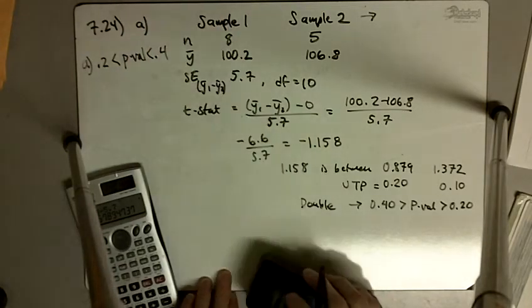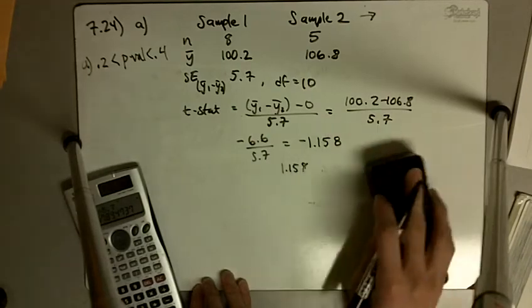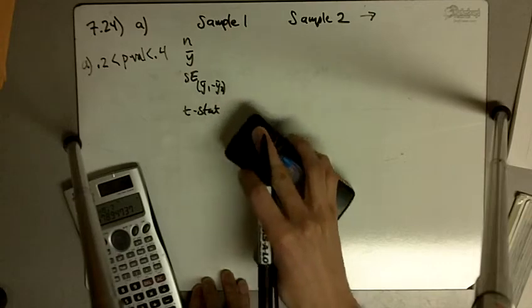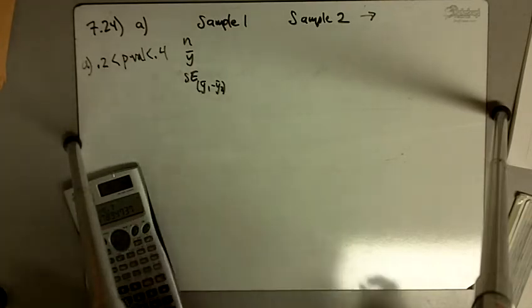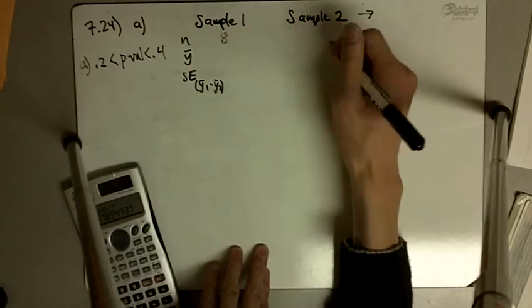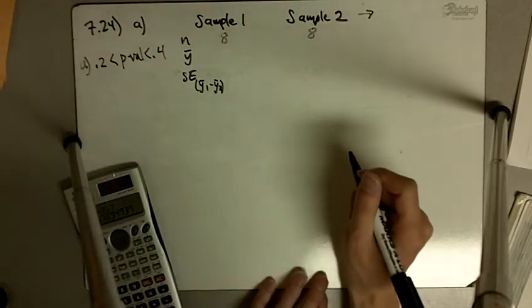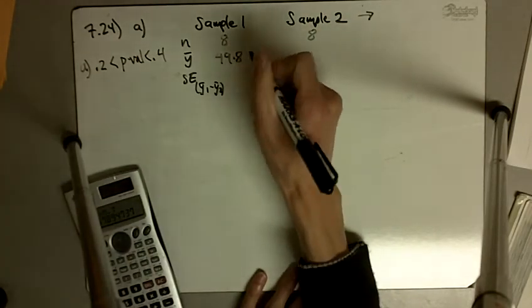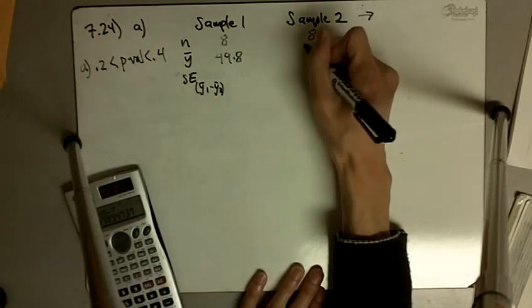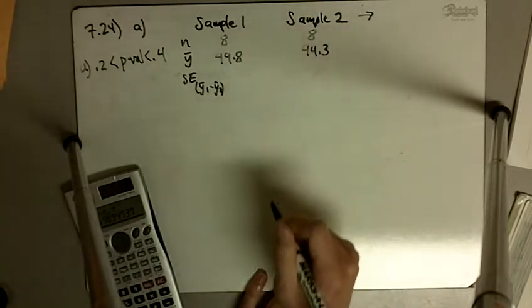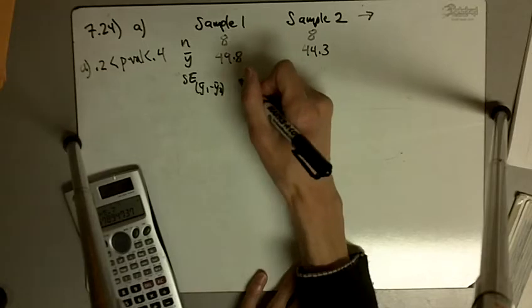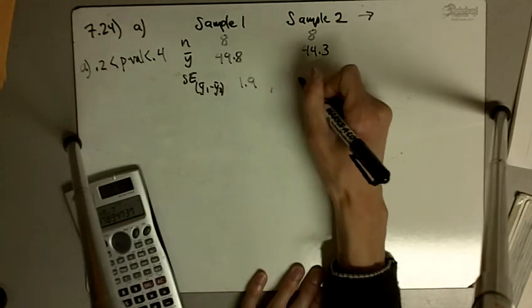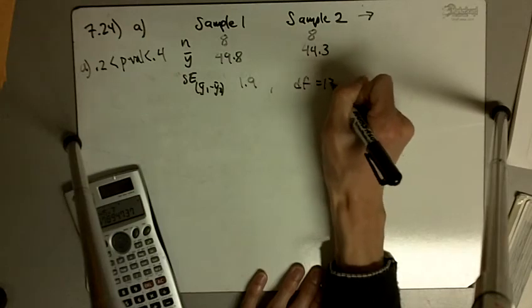Let's do the same for part B. Now our numbers: we have 8 and 8, y bar 1 is 49.8 and y bar 2 is 44.3. We're given that the standard error is 1.9 and the degrees of freedom equals 13.